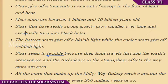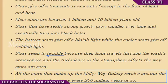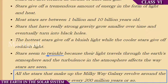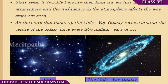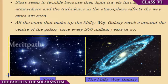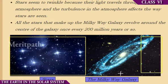Stars seem to twinkle because the light travels through the Earth's atmosphere, and the turbulence in the atmosphere affects the way stars are seen. All the stars that make up the Milky Way galaxy revolve around the center of the galaxy once every two hundred million years or so. A system of billions of stars is called a galaxy. Here we can see the twinkling stars and this is the Milky Way galaxy.